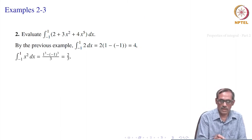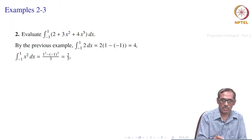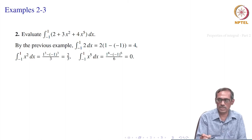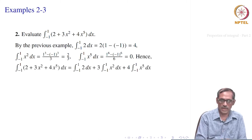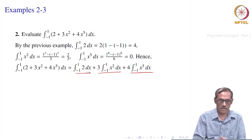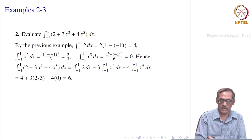For the x² term: ∫₋₁¹ x² dx = (1³ − (−1)³)/3 = 2/3. For x⁵: ∫₋₁¹ x⁵ dx = (1⁶ − (−1)⁶)/6 = 0. So the full integral is 4 + 3·(2/3) + 4·0 = 4 + 2 + 0 = 6. You can see how the properties help us integrate a polynomial if we know how to integrate the power functions x^n.